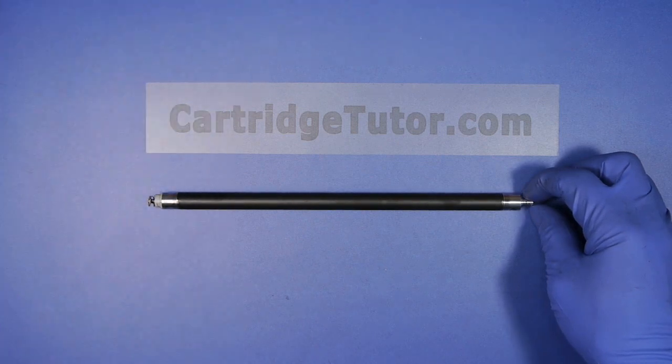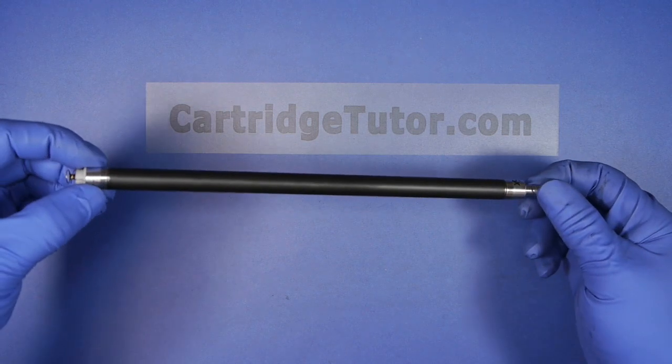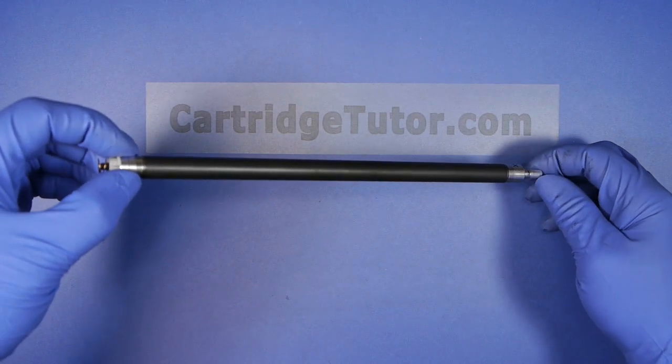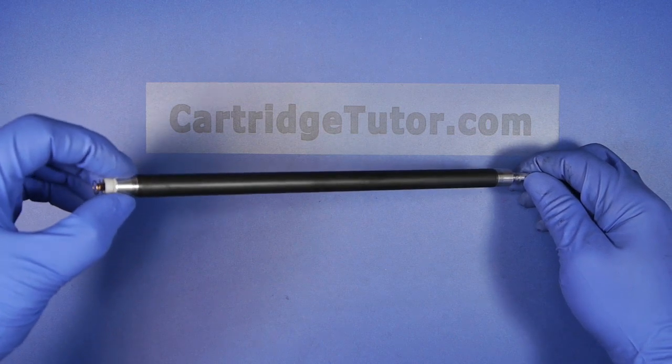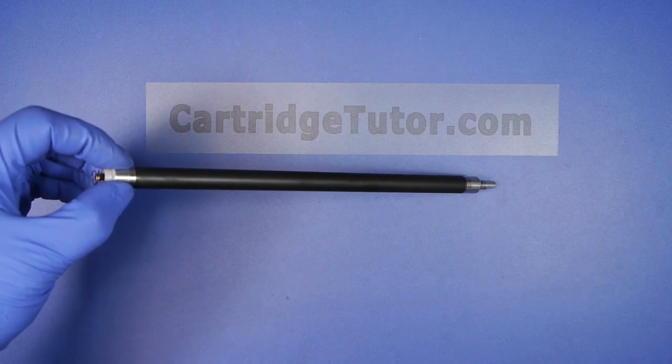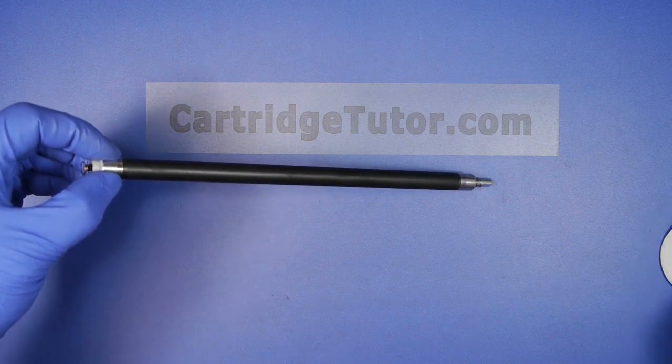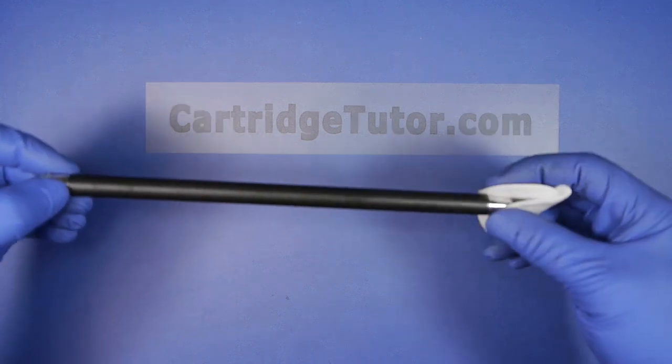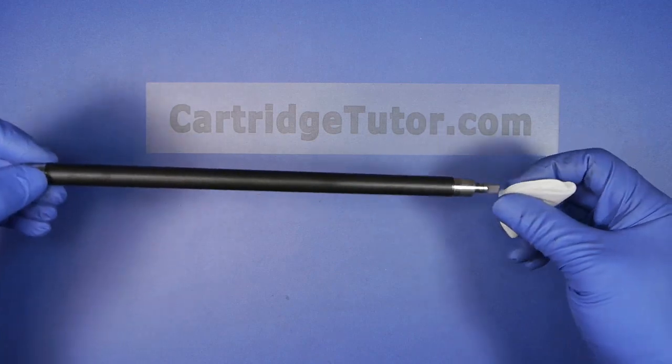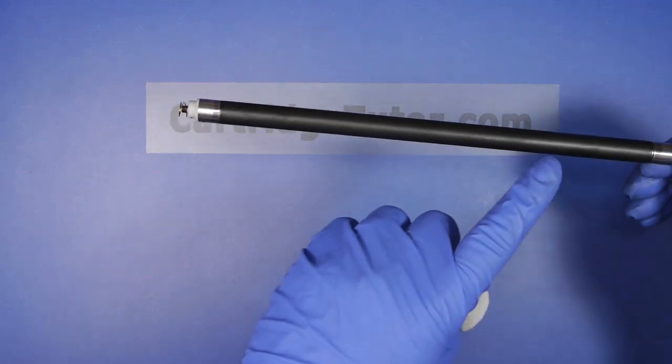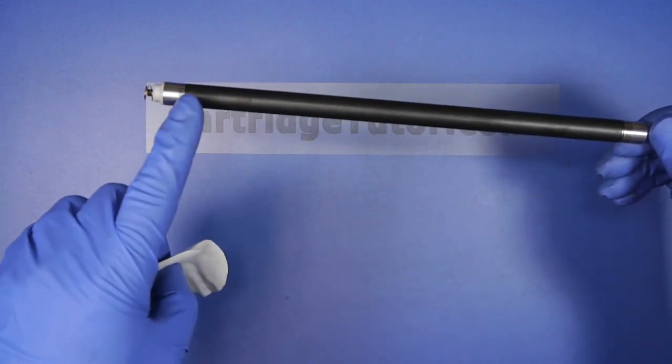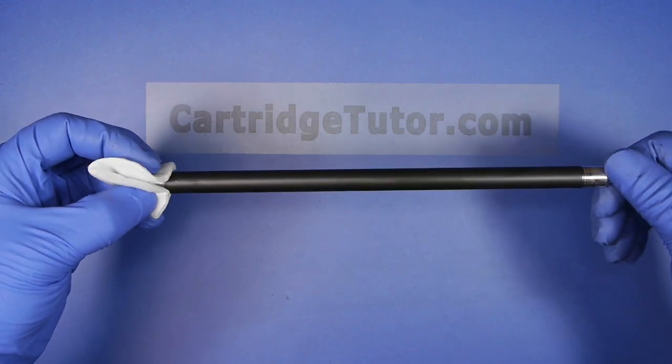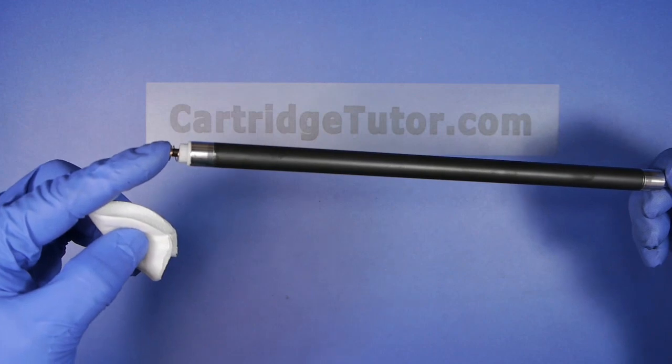Basically when you remove a mag roller and you plan on reusing it, you want to vacuum off the excess toner or blow it off into a toner dump station. After you've completed that, you want to take a cotton ball with alcohol and clean down the ends of any excess toner. You want to be careful not to damage or scrape the dark portion of the mag roller. You want to clean down the spring area too which is at this end.